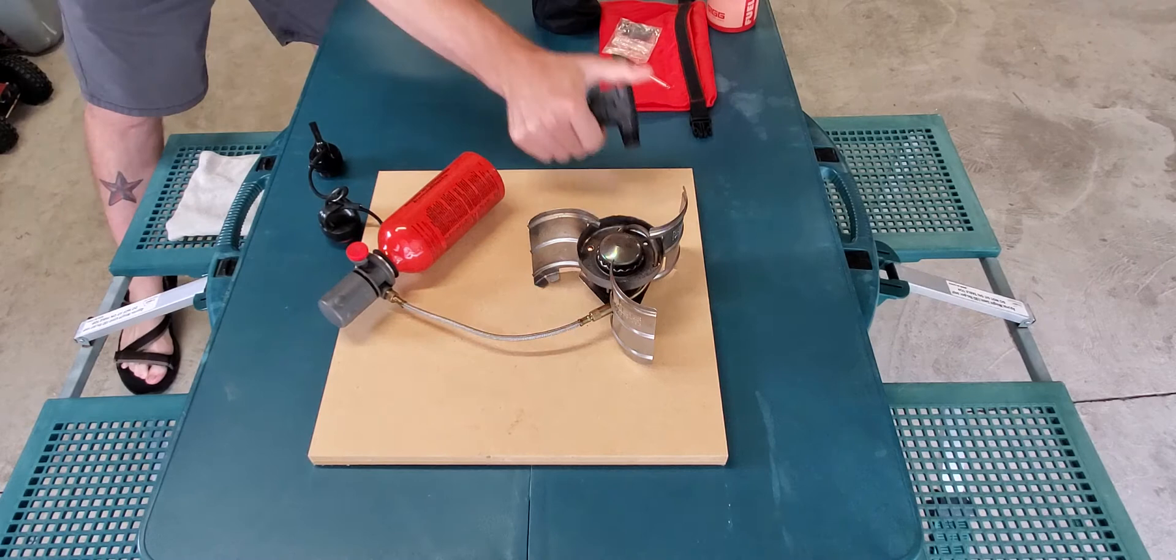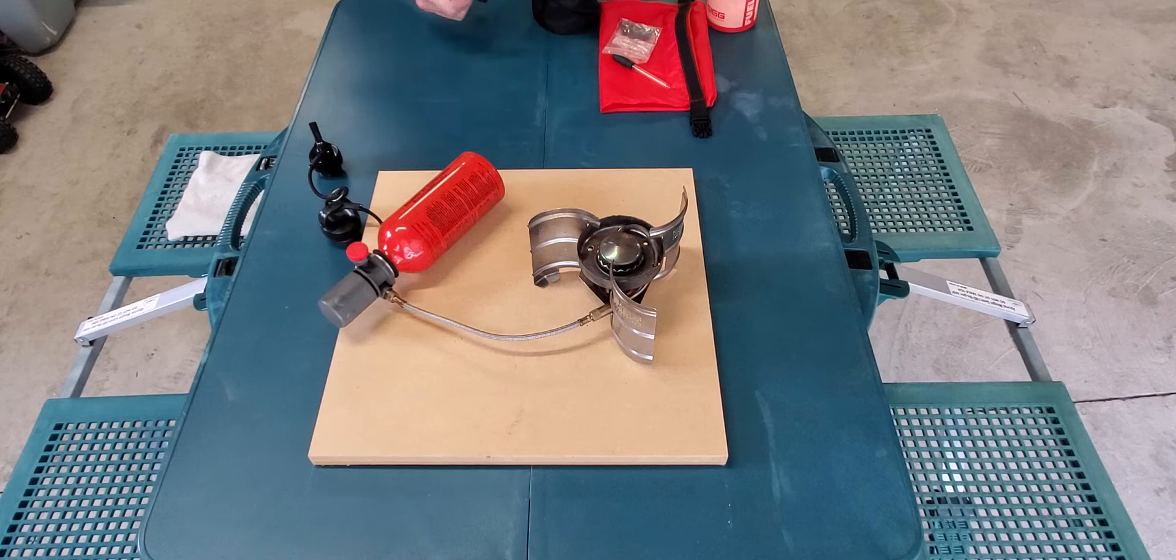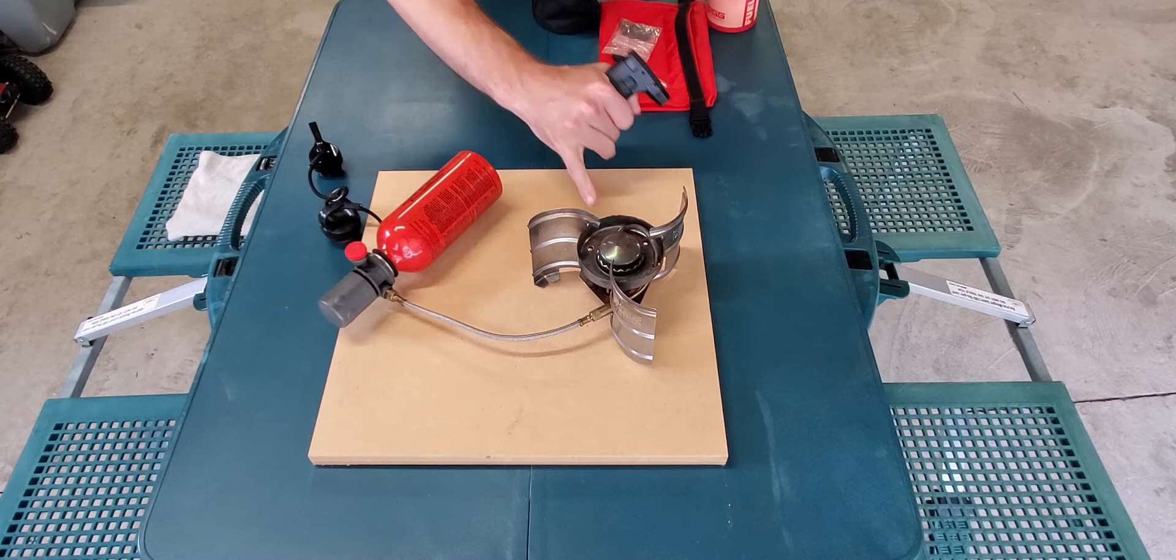Close it back up. You want to light the little bit of fuel that came out. You'll see it down here. That's what that little reservoir is for, to catch the fuel to prime the stove.